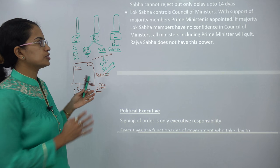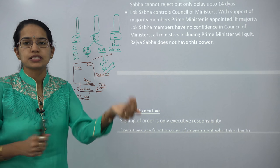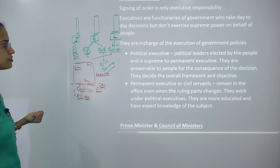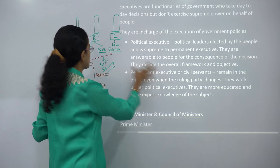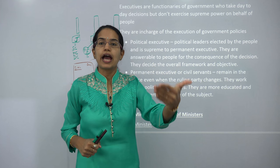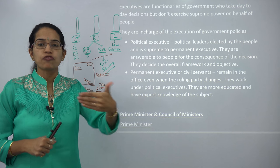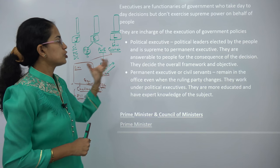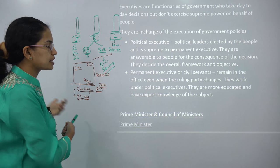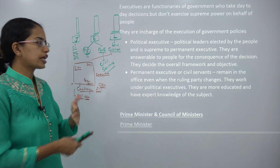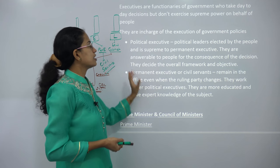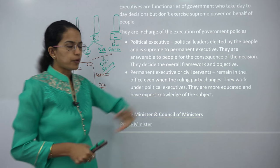Lok Sabha controls the council of ministers, and the Prime Minister is appointed based on majority support in Lok Sabha. Political leaders represent the people — they are more front-facing and answerable to the public, making them supreme over the permanent executive. The permanent executive, mainly civil servants, has a more hidden role but is comparatively more educated and well-versed. However, the overall framework is set by the political executive in power.